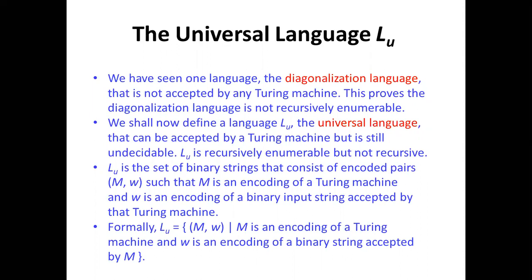Now we define the universal language L_U. L_U is a recursive enumerable language that can be accepted by a Turing machine, but it is still undecidable — meaning L_U is recursively enumerable but not recursive. Formally, L_U is the set of binary strings consisting of encoded pairs (M, W) such that M is the encoding of a Turing machine and W is the encoding of a binary input string accepted by that Turing machine.